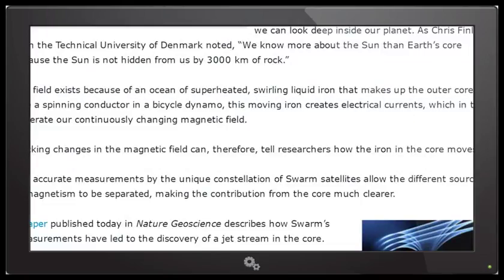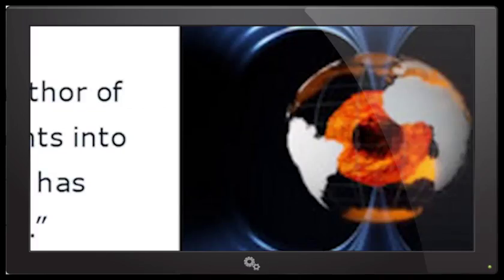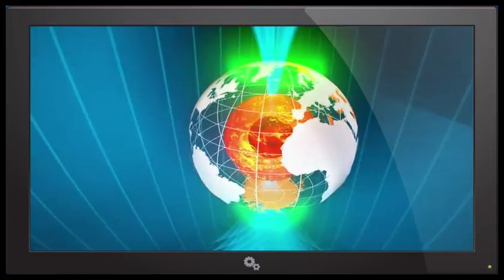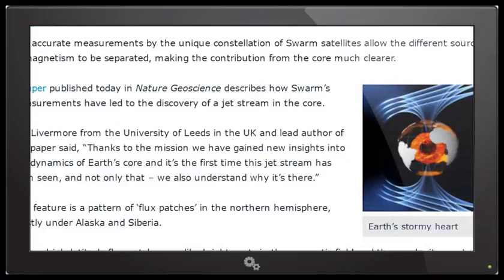Tracking changes in the magnetic field can therefore tell researchers how the iron in the core moves. It looks like there's a little planet inside of Earth. Maybe it's like a little Sun. Maybe Earth-like planets turn into Suns. You don't know. The accurate measurements by the unique constellation of Swarm satellites allow the different sources of magnetism to be separated, making the contribution from the core much clearer.